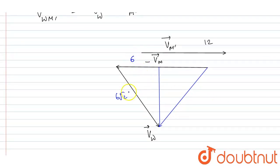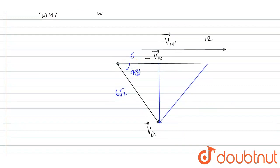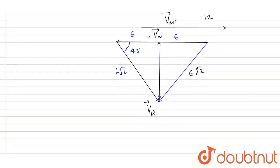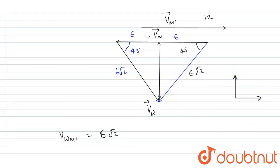The man's velocity makes an angle of 45 degrees with the wind velocity. Since this angle is 45 degrees and the remaining length is also six — and this length is common to both triangles — by symmetry the two triangles are congruent. Therefore, the velocity of wind with respect to man is again six root two, but the direction is now south-south-west.